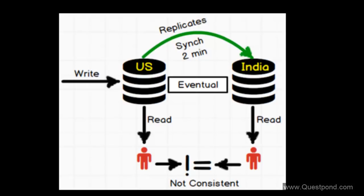This is termed as Eventual Consistency. Eventual Consistency means we do not do anything special — we just leave it to the network, the transactions, the locks, or whatever we have at that moment. Because of this, at some moment in time we would get inconsistent data for end users in different geographies. Sometimes this consistency is okay if the application is not mission-critical.